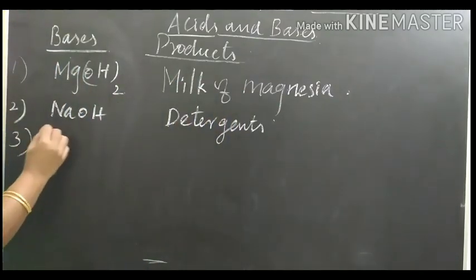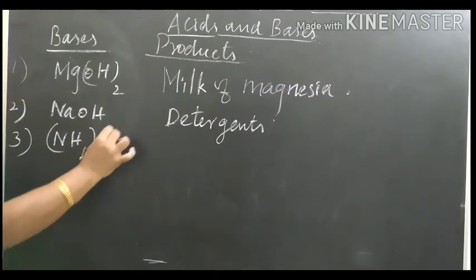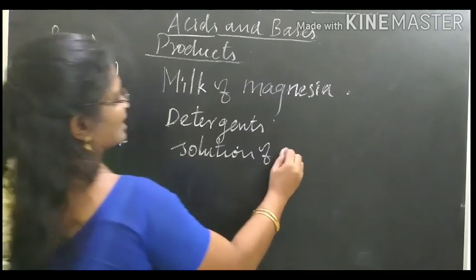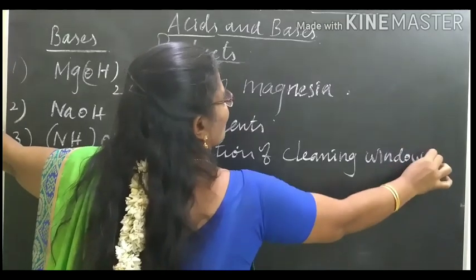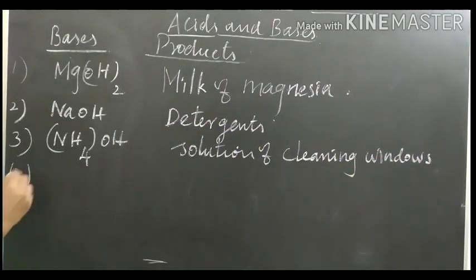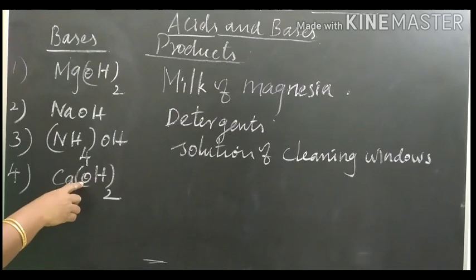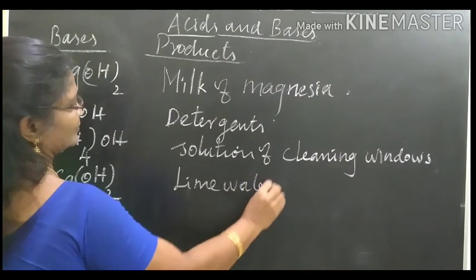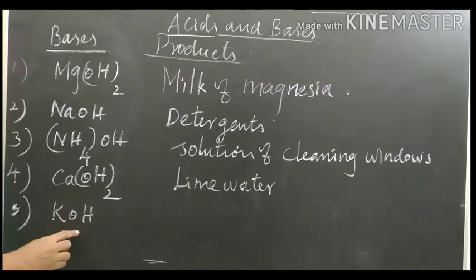Third one: Ammonium hydroxide — solution for cleaning windows. Fourth one: Calcium hydroxide. Calcium hydroxide is an important ingredient of lime water. Fifth one: Potassium hydroxide. Potassium hydroxide is an important ingredient of soft soap.